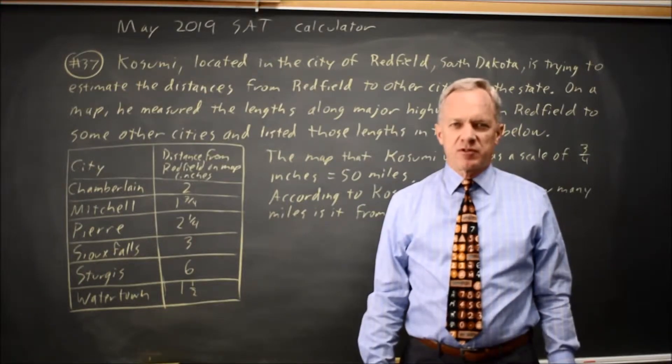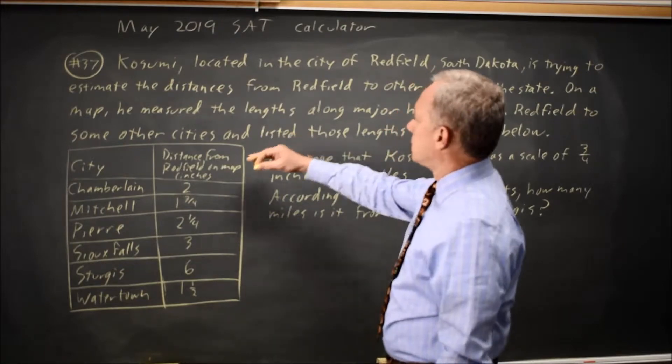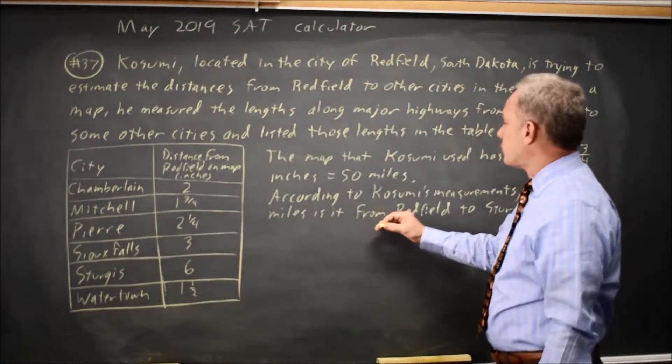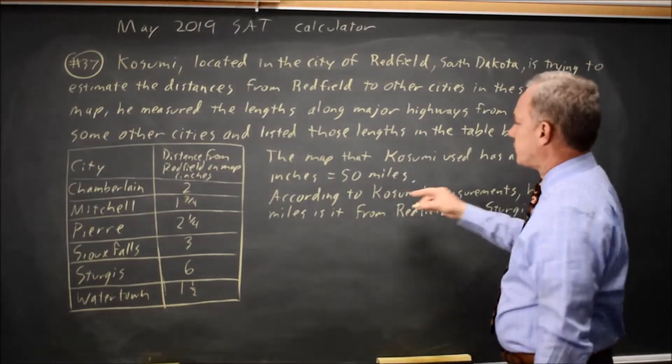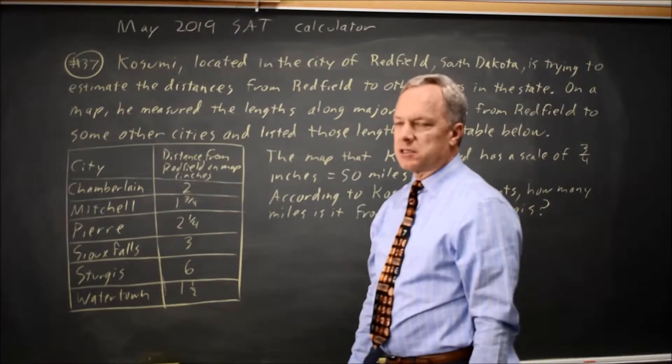This is calculator question 37 for the May 2019 International Exam. College Board gives us a table of distances on a map and a scale for the map where three-quarters of an inch equals 50 miles. These are distances in inches on the map.